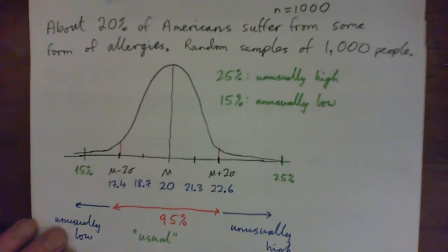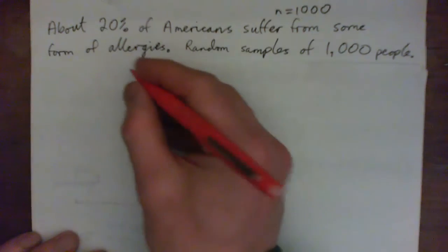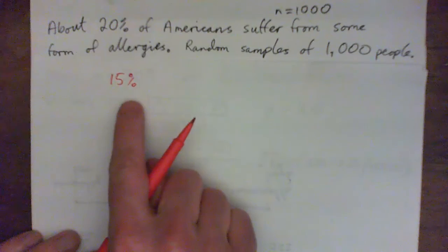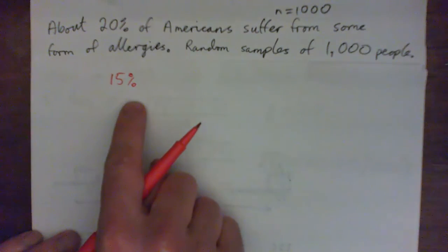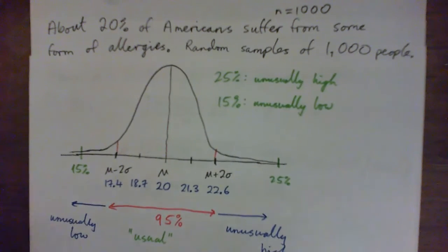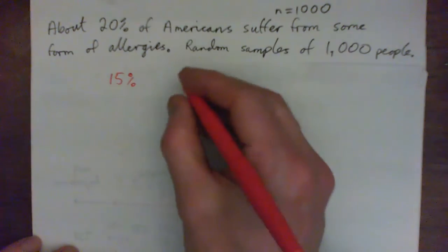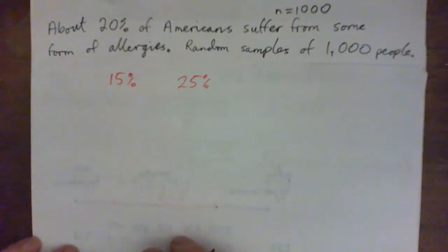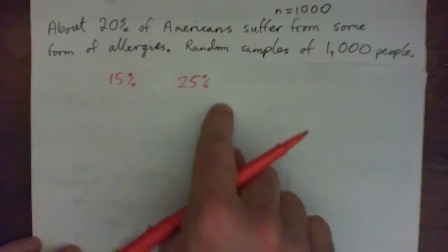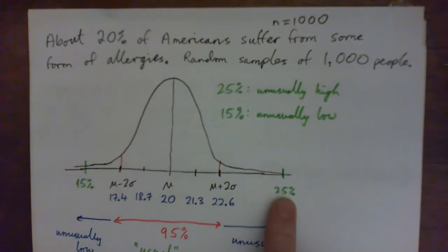The interesting thing is that if you didn't use the normal curve, and you just saw that in your town only 15% had allergies when the average is 20%, you might think — so what? But 15% is actually a big deal. The normal curve tells us what is a big deal and what's not. Even though 25% is only five percent more than 20%, when you look at the normal curve you see that's way high — very unusual for a group of a thousand people.